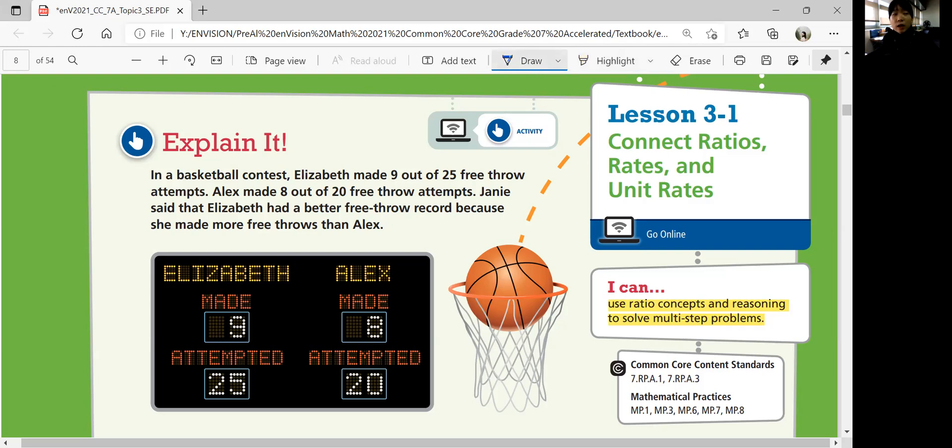Let's look at explaining it. In a basketball contest, Elizabeth made 9 out of 25 free throw attempts. Alex made 8 out of 20 free throw attempts. Jenny said that Elizabeth had a better free throw record because she made more free throws than Alex. But she tried more, so is this really valid?